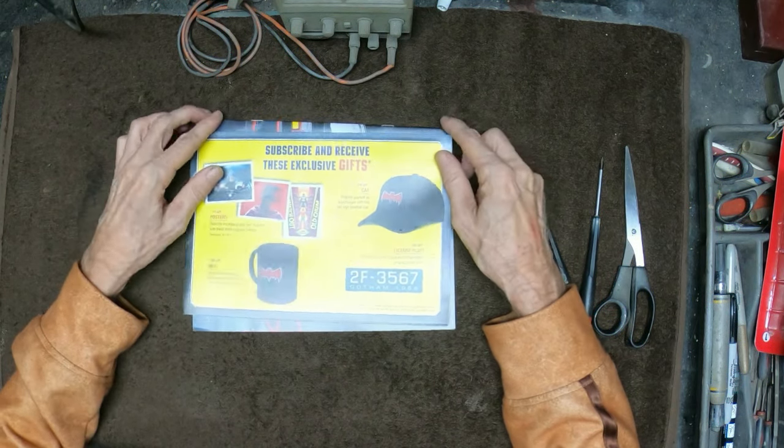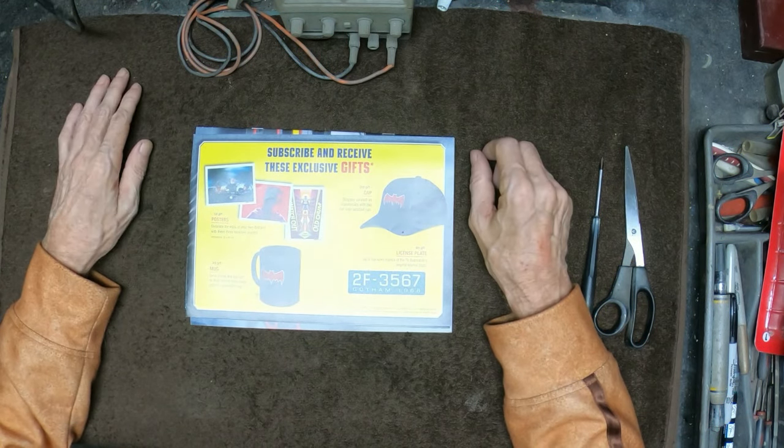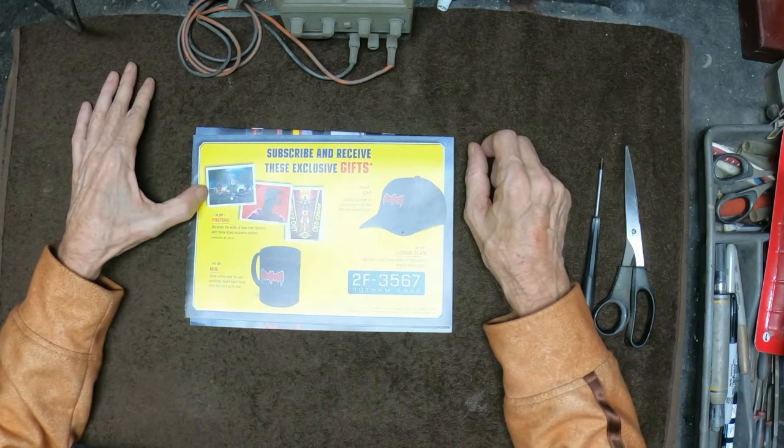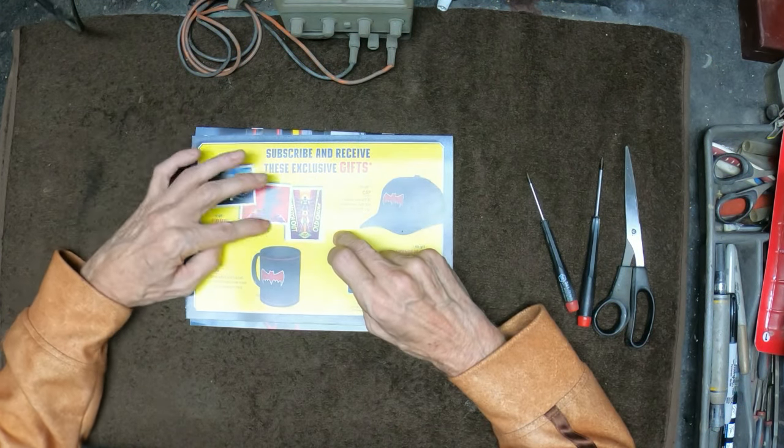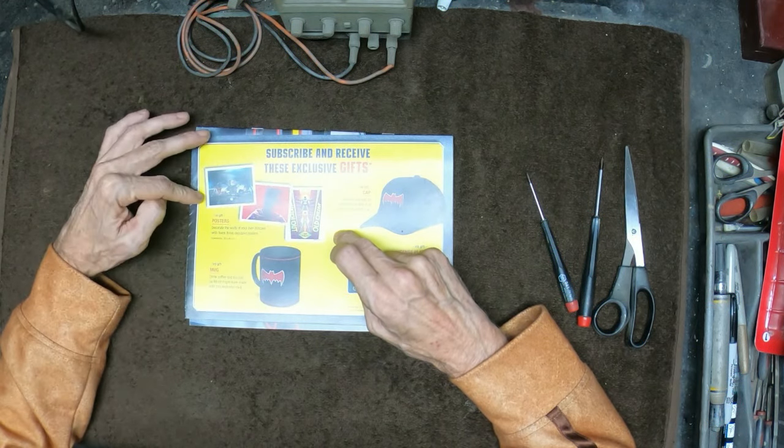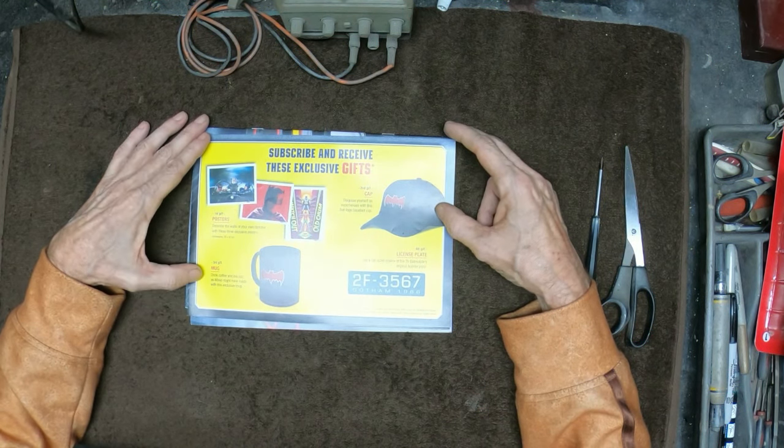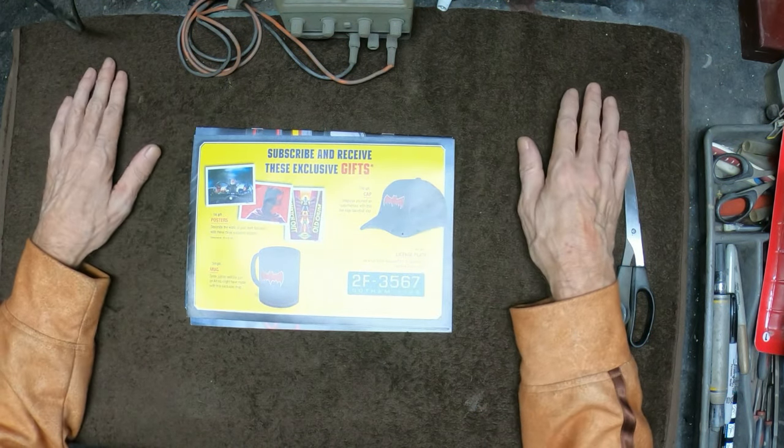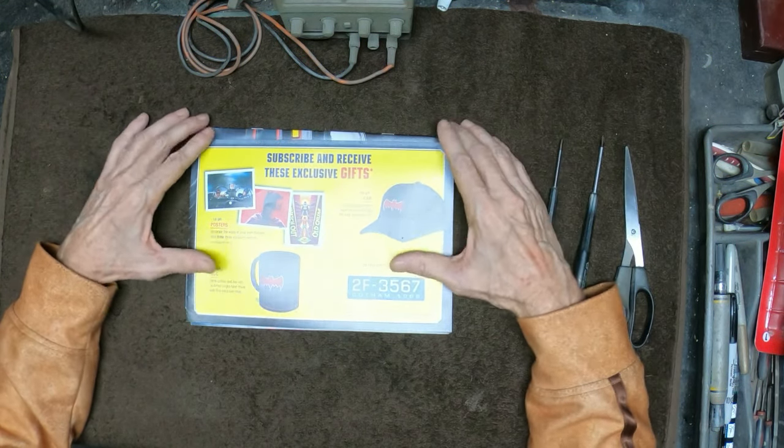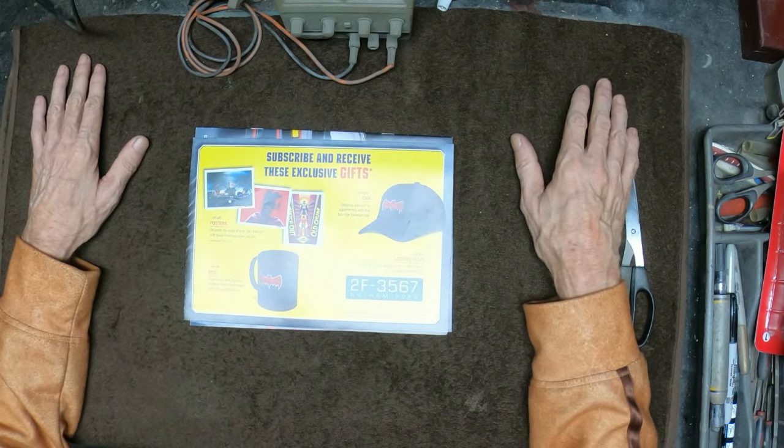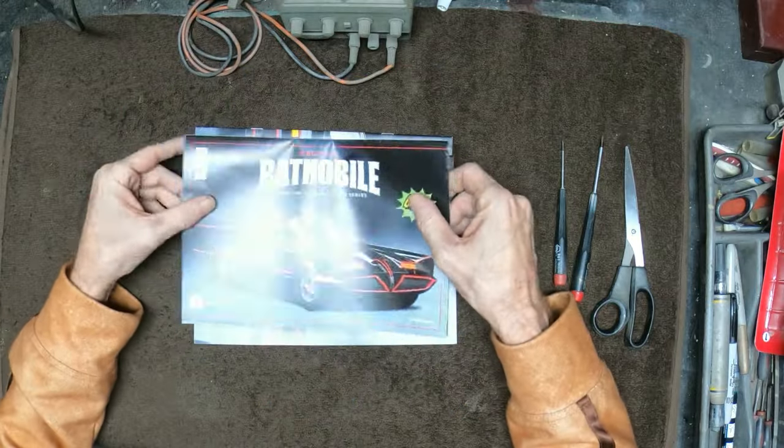When you subscribe to this, you'll be getting some really cool gifts along the way. You get a poster here as your first gift, which is some incredible photography from the original series and some period-correct artwork. Second gift is a beautiful Batman cap. Your third gift is a really nice mug. And the fourth gift will be the actual Batmobile license plate. Those are all really cool gifts that you can display along with your model. I can't wait to get started. We'll pause real quick here. I'll bring in the first parts pack.